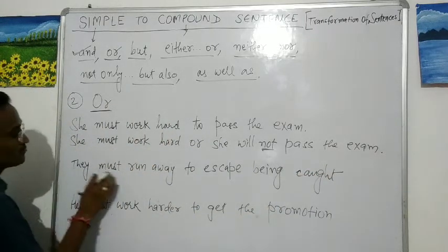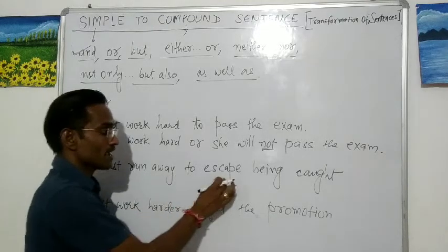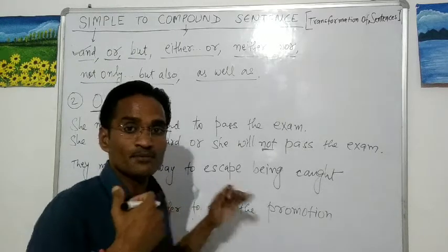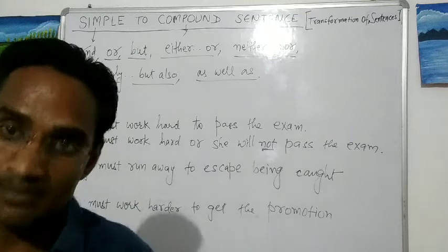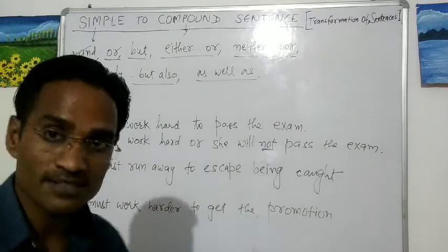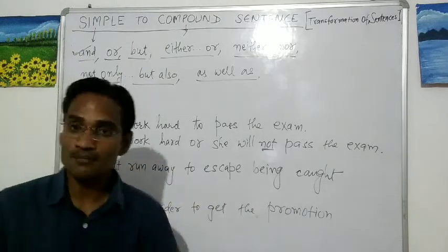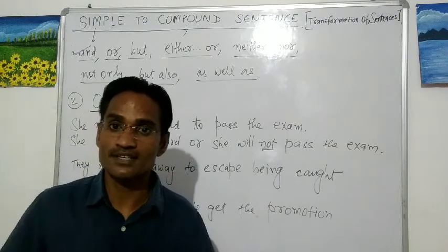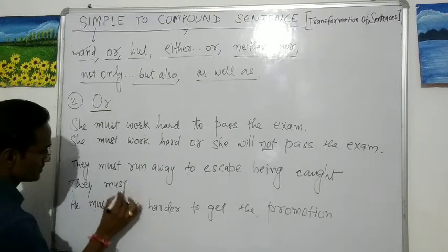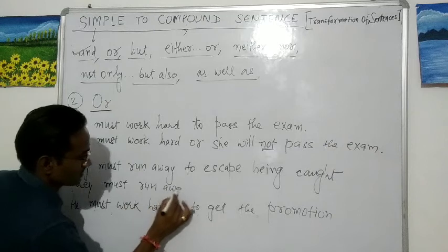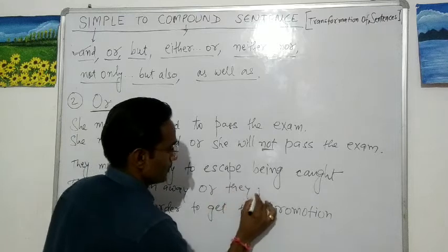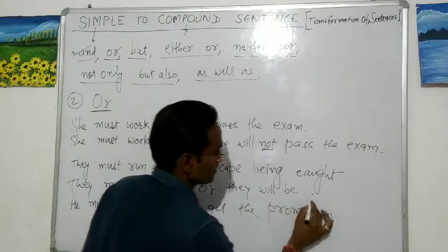Next example: 'They must run away to avoid being caught.' We change this to a compound sentence using 'or.' So: 'They must run away, or otherwise they will be caught.' The compound sentence is: 'They must run away or they will be caught.'